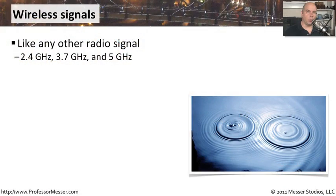The signals used by your wireless network are just like any other radio signal you might find — like any shortwave signal or car radio signal. They are simply radio waves, and because of that, they are susceptible to types of interference.